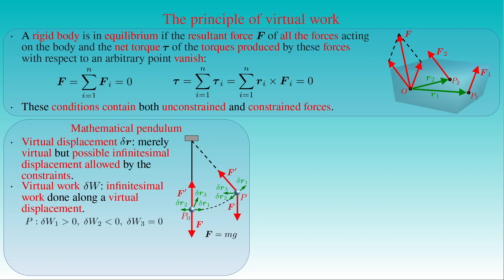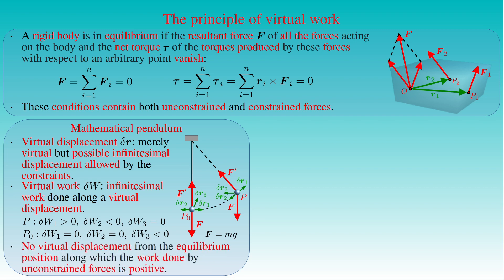Therefore, the virtual work done along displacements delta R1, delta R2, and delta R3 from point P by the unconstrained force F is zero, zero, and negative, respectively. Similarly, the virtual work done along these displacements from equilibrium point P0 is zero, zero, and negative, respectively. Since the unconstrained force represents gravity, the work done by gravity is positive, zero, or negative depending on whether the displacement decreases, does not change, or increases the bob's height. This example shows there is no virtual displacement from the equilibrium state along which the work done by unconstrained forces is positive.